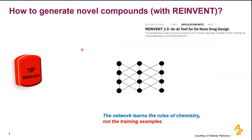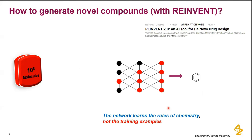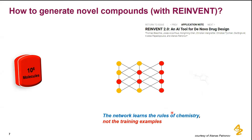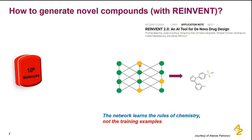One way to generate new ideas — using REINVENT, which we developed in-house, though many tools exist — is to take a very large dataset of molecules from a database and train a neural network to reproduce it. Done properly, the network won't just memorize training examples; it learns the rules of chemistry implicitly, deducing from all examples that adding six substituents to a carbon atom is not a good idea. The result is a generative model with high generative capacity, able to access many different areas of chemical space.